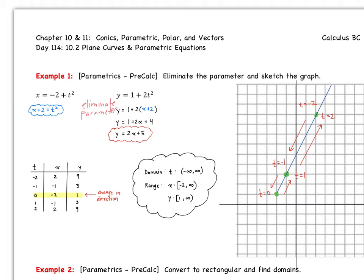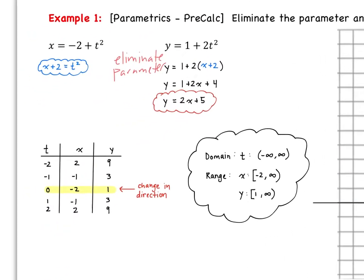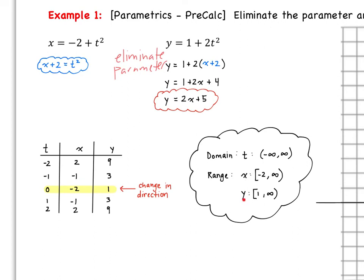Now if we need to talk domain and range: the domain is our t values, because each x and y is in terms of t, and I can pick any value for that domain. Our range is the x and the y. At the change in direction point, x goes from negative 2 on to infinity, and y goes from 1 on to infinity.